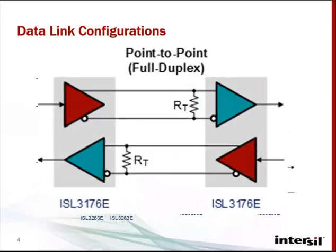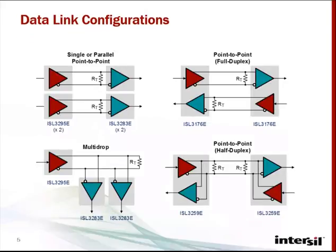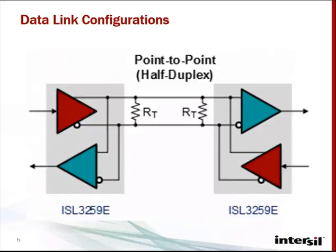Full-duplex point-to-point links are implemented in applications requiring low latency and high data throughputs by enabling simultaneous transmission and receiving. And half-duplex point-to-point links are used for low cabling cost while ensuring high data rates without stringent latency requirements.